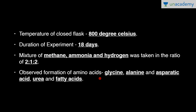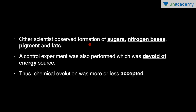They observed the formation of amino acids — glycine, alanine, and aspartic acid — as well as urea and fatty acids. Sometimes exam questions ask which amino acids are formed in the Miller-Urey experiment, so remember: glycine, alanine, and aspartic acid. Other scientists performing the same experiment also observed formation of sugars, nitrogen bases, pigments, and fats.